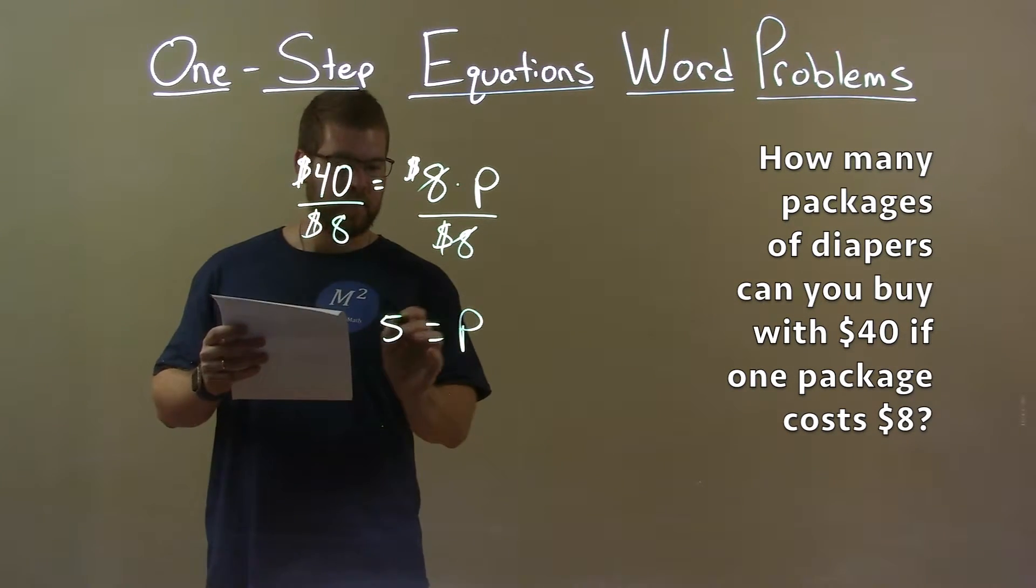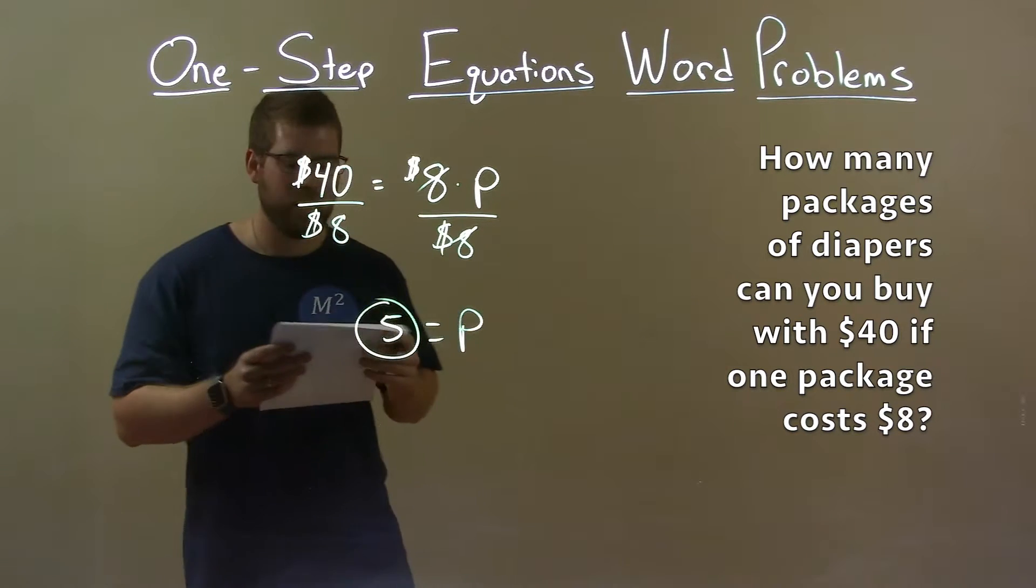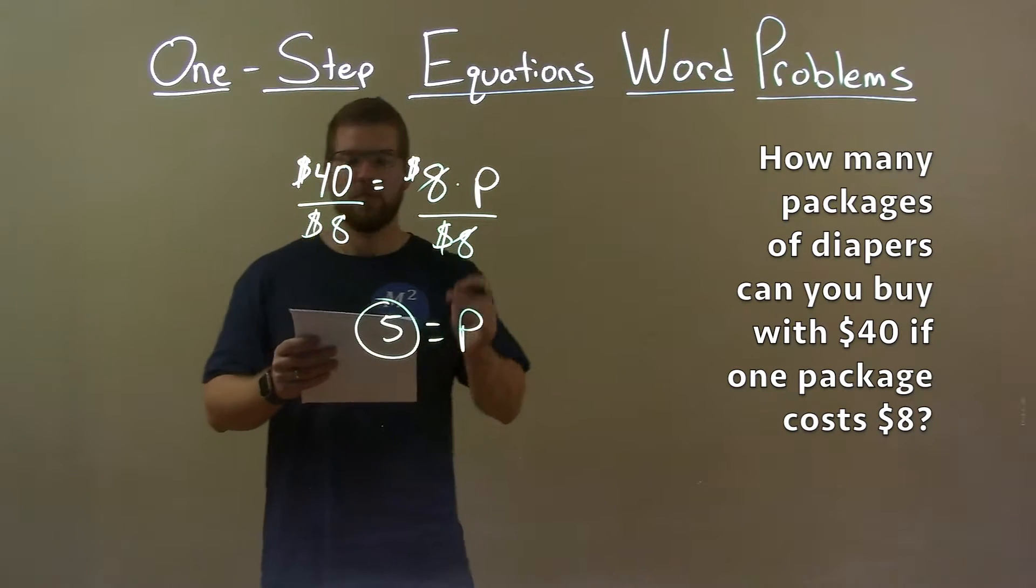So 5 is the number of packages that we can purchase for $40.